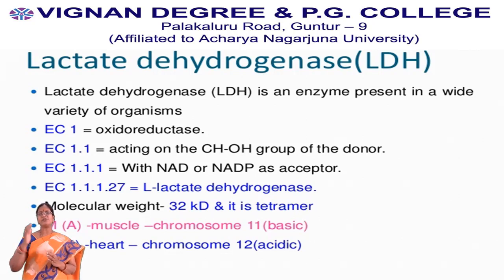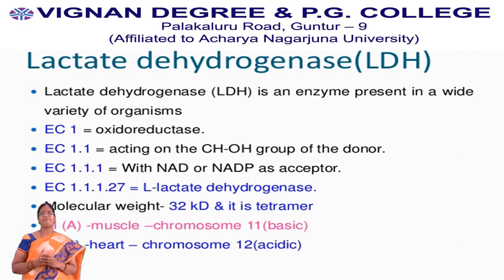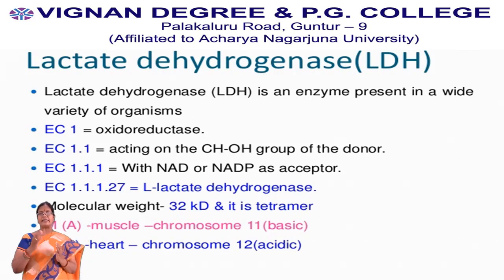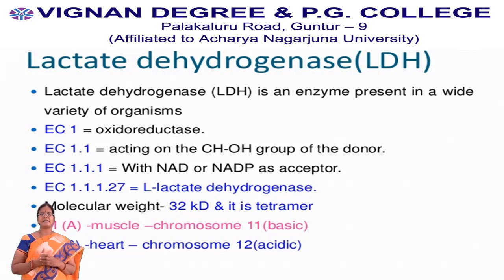It will act on the CHOH group of the donor. For this enzyme, NAD or NADP acts as acceptor. So this is the significance of enzyme code. The information we get from enzyme code 1.1.1.27 is: it belongs to oxidoreductases, it will act on the CHOH group of the donor, and NAD or NADP acts as acceptor.